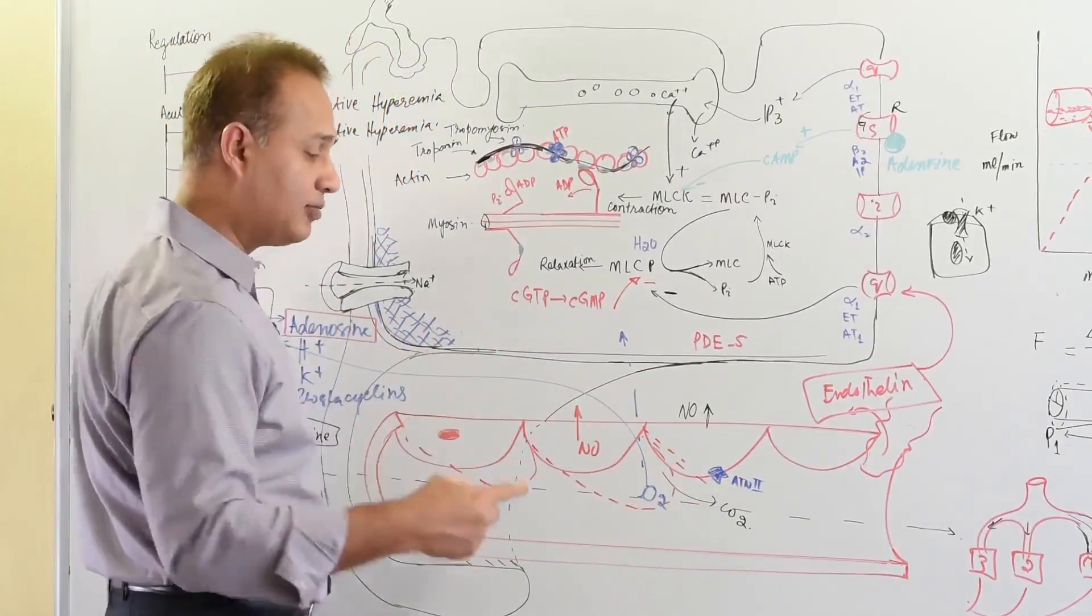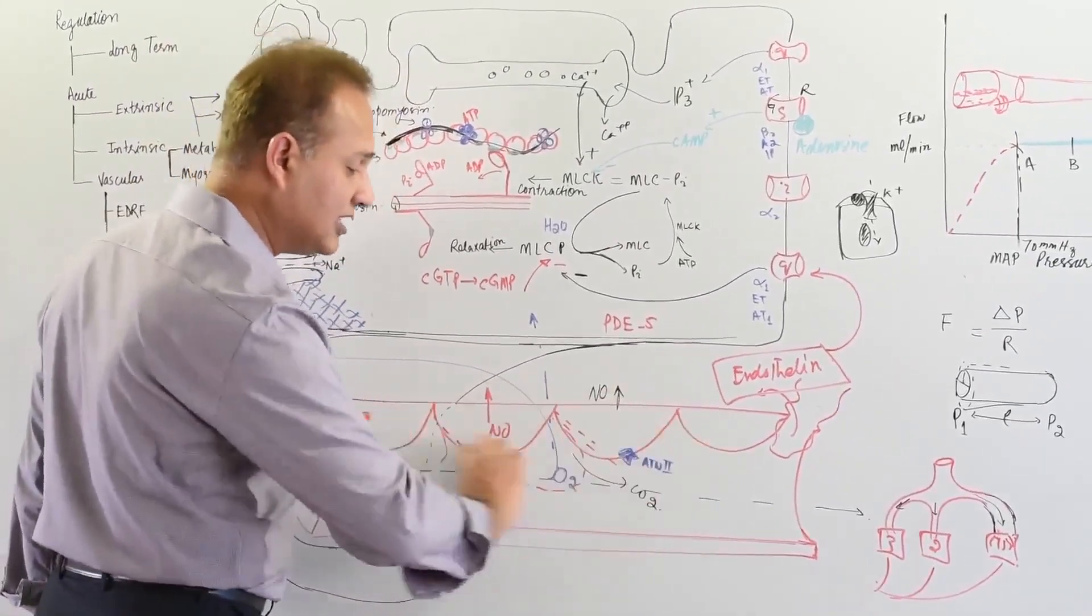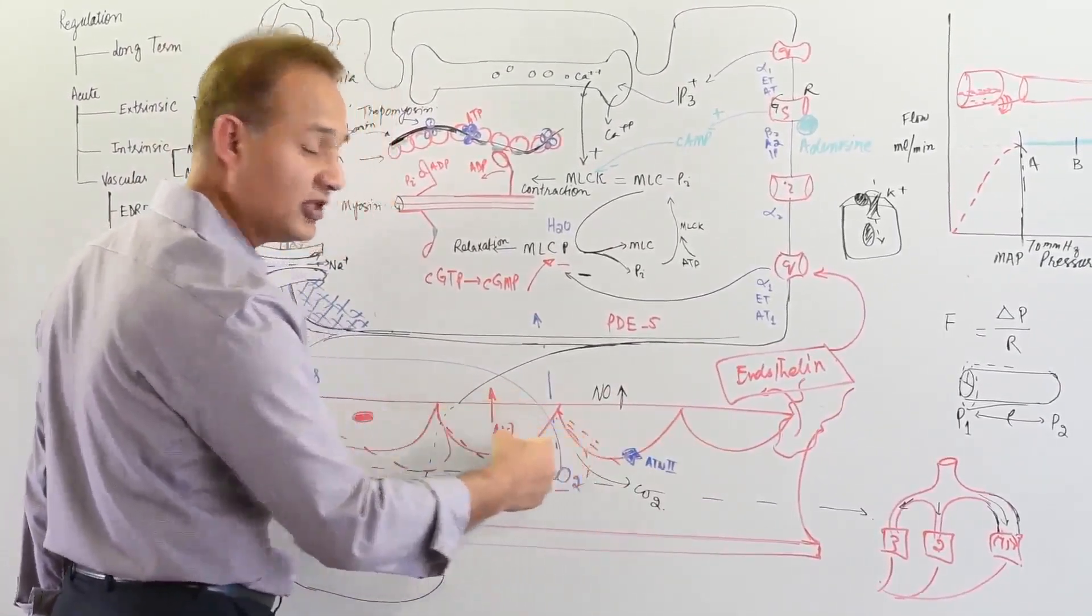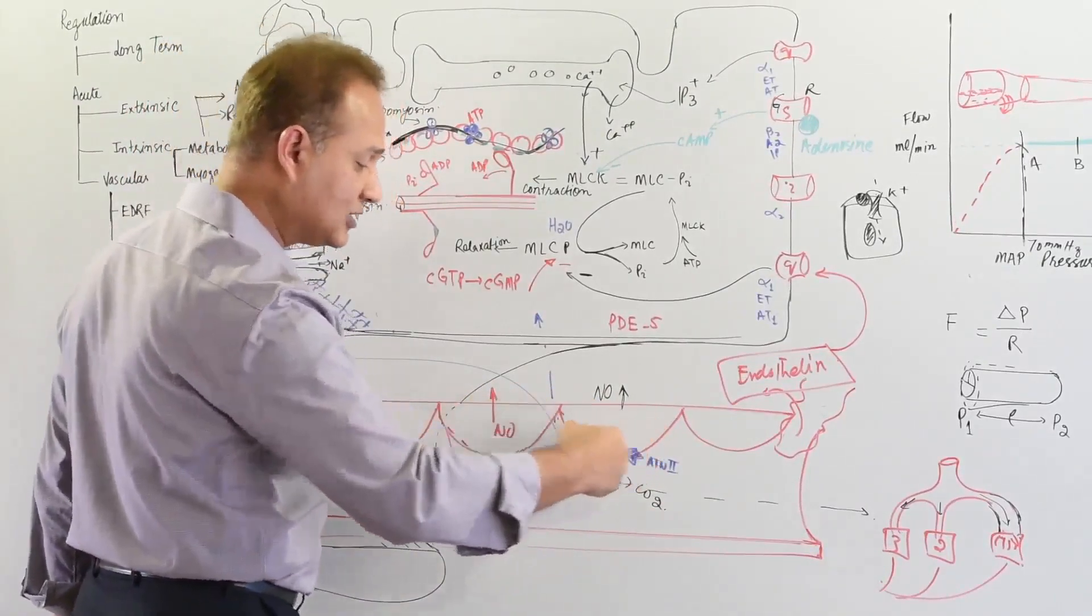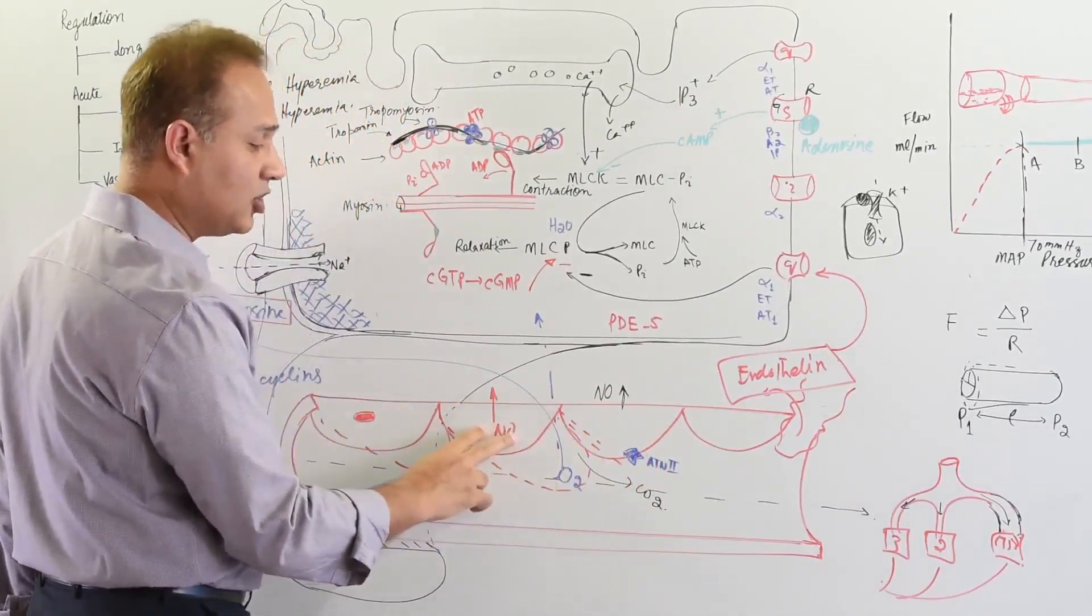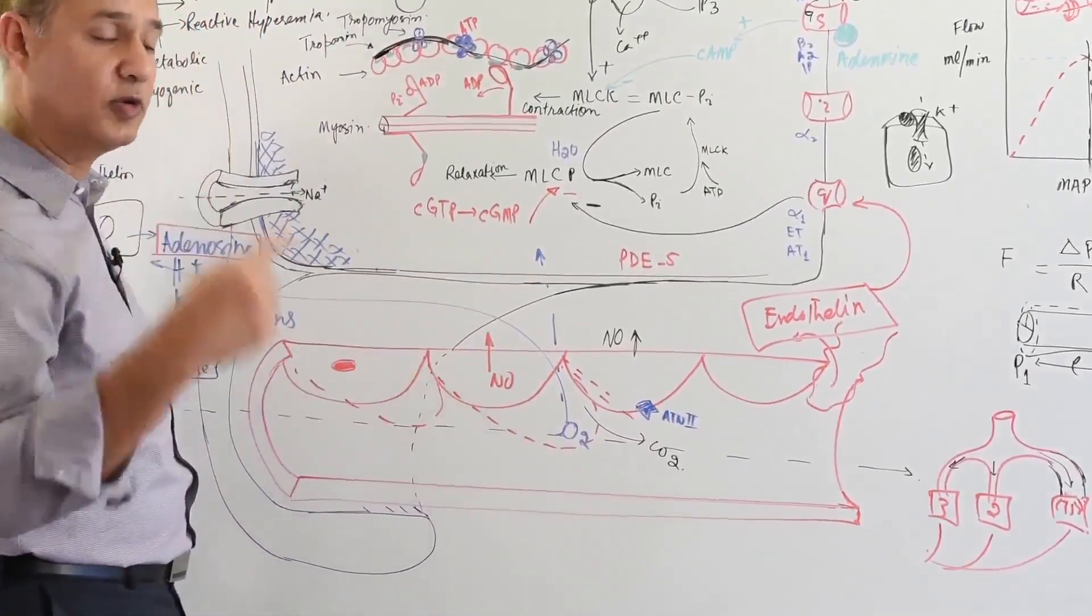It is released by multiple factors. For example, when there is shearing effect - when blood flow through a vessel increases and causes stretch of the endothelial cell because of blood viscosity. That drag, that shearing effect, would mechanically trigger the endothelial cell to release nitric oxide.